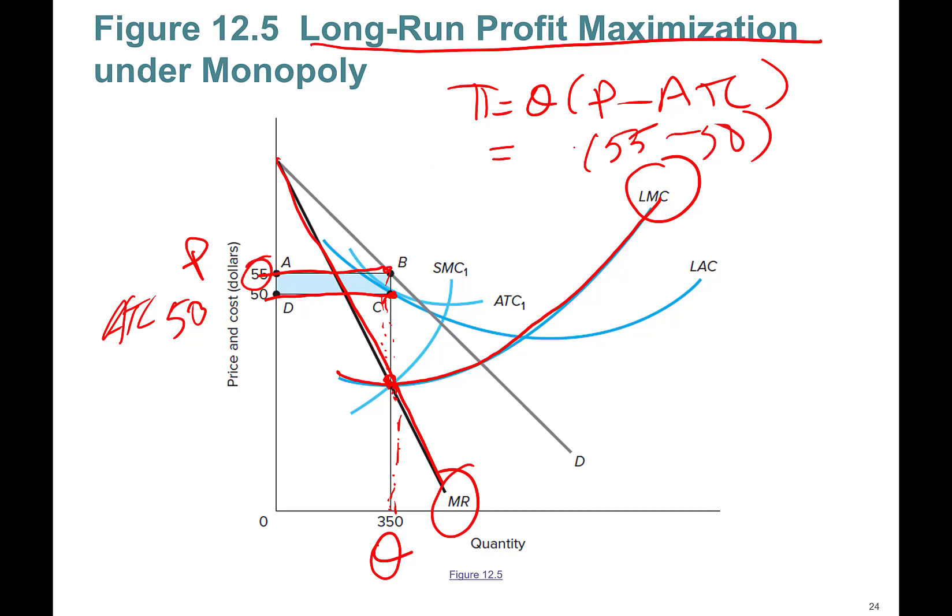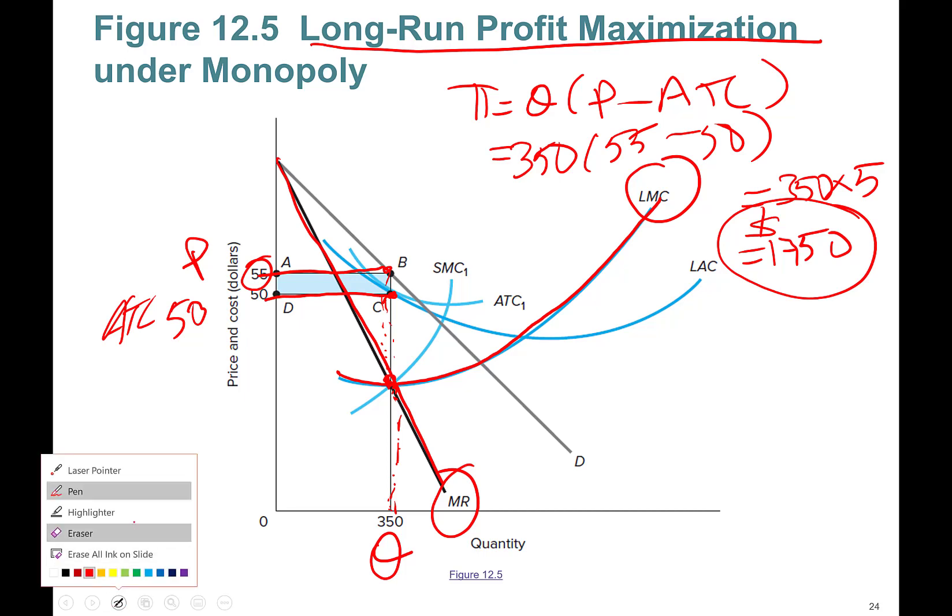So it's 350 times 5, what is it going to be? 1750, that's the profit. Okay, so I want to highlight something at that profit-maximizing level. Check this out: long-run average cost curve and average total cost curve, that's the short-run, they are actually tangent to each other.